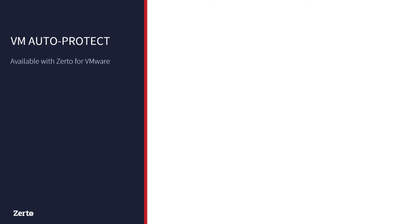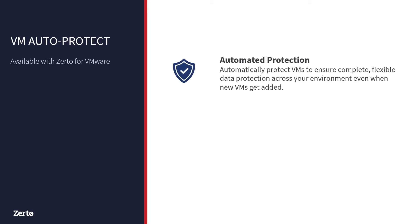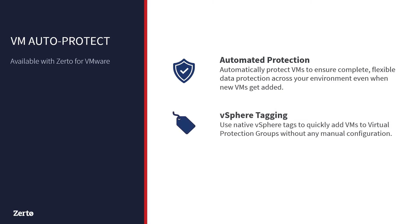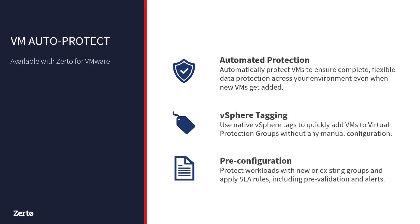As of Zerto 9.0, VMs can be automatically protected in VMware using vSphere's native tags. Zerto's VM AutoProtect function helps eliminate manual processes and ensures infrastructure and operations teams can easily protect servers as they're deployed. VM AutoProtect adds a new way to create and edit virtual protection groups, but manual creation via GUI or API is also still available and used in versions prior to Zerto 9.0.